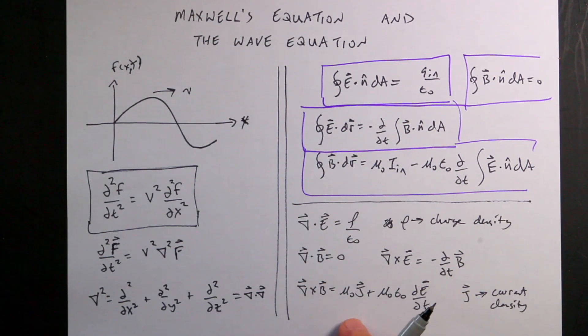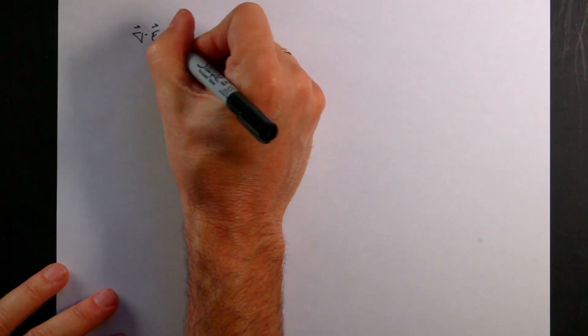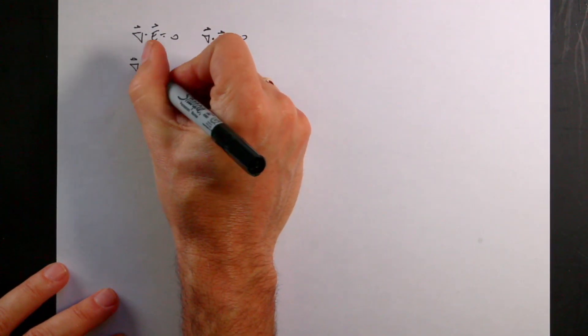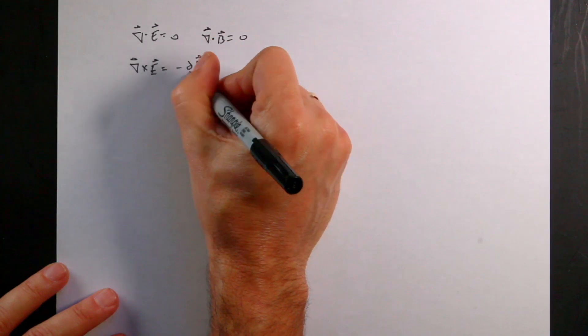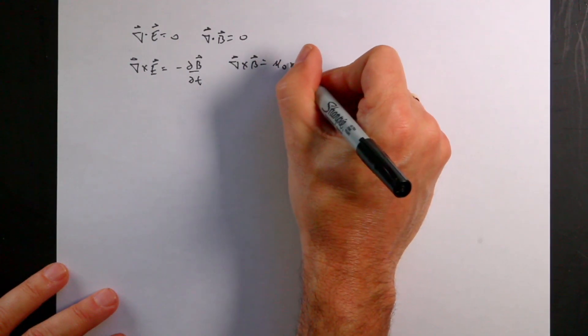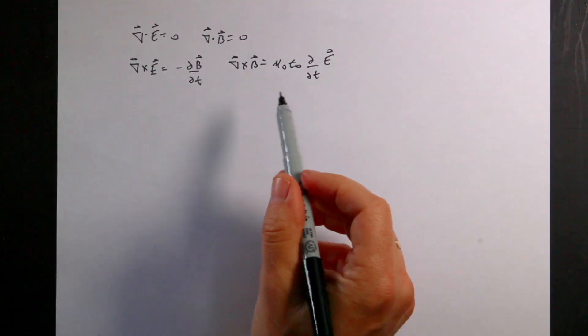Now we want to use these to get the wave equation. Suppose we have Maxwell's equations in free space — meaning no electric charges, so charge density is zero, and no electric currents. Then we have ∇·E = 0, ∇·B = 0, ∇×E = −∂B/∂t, and ∇×B = μ₀ε₀·∂E/∂t.